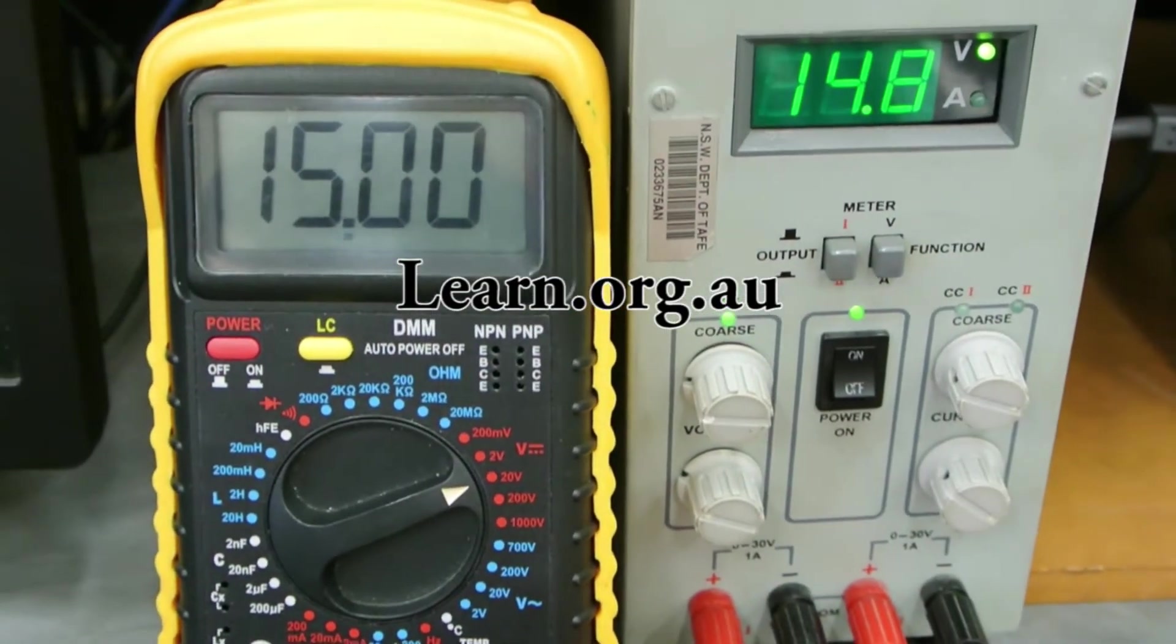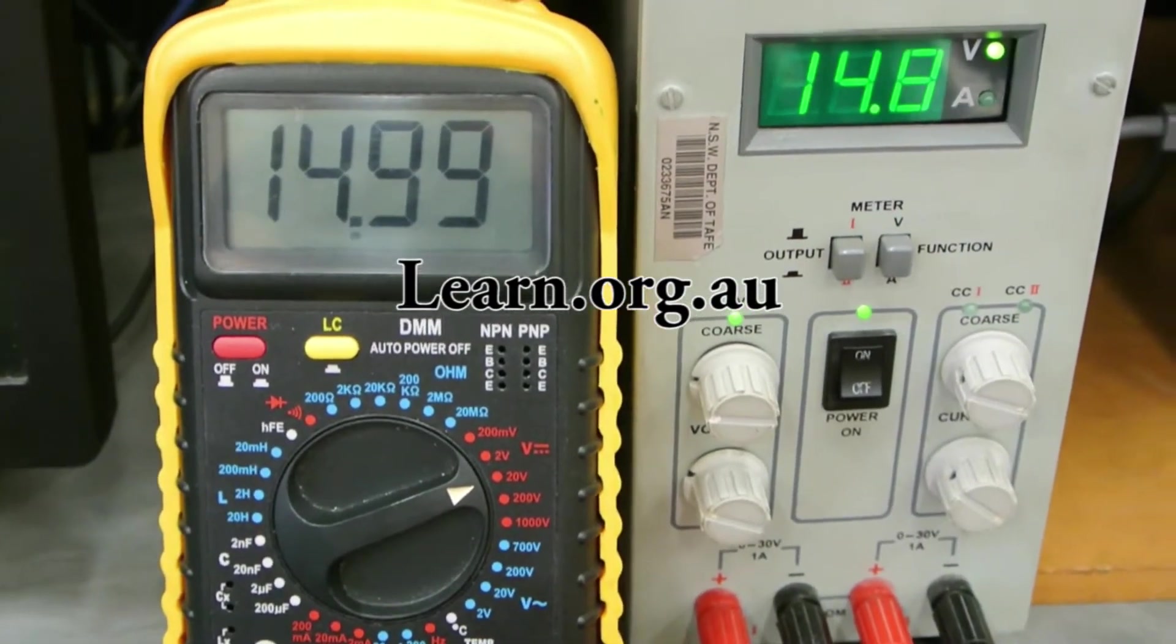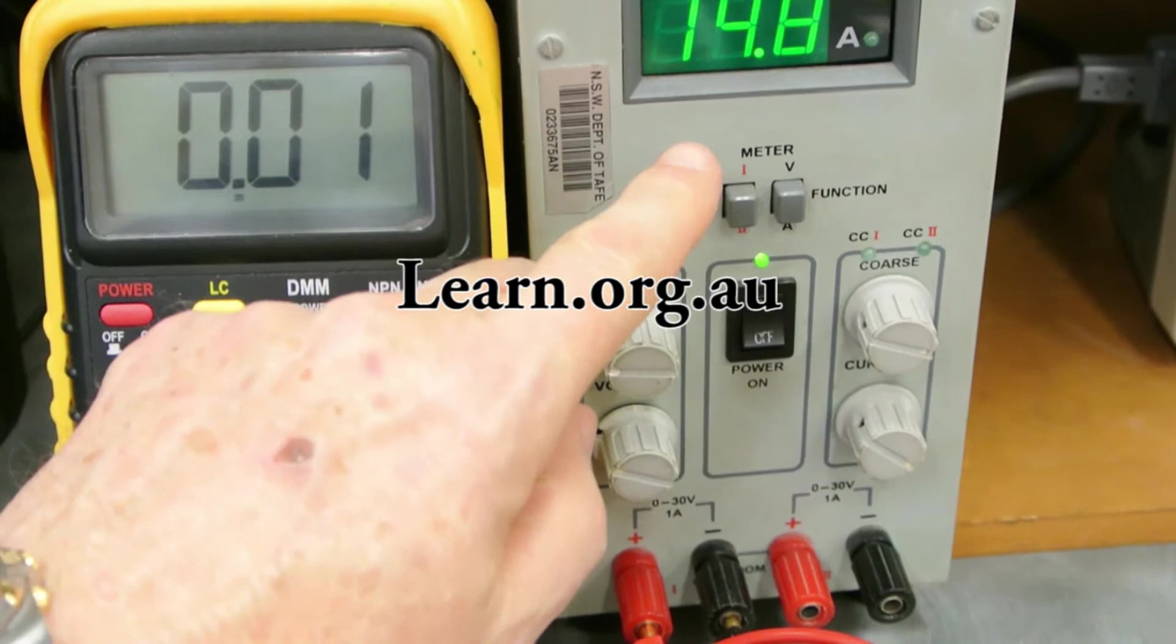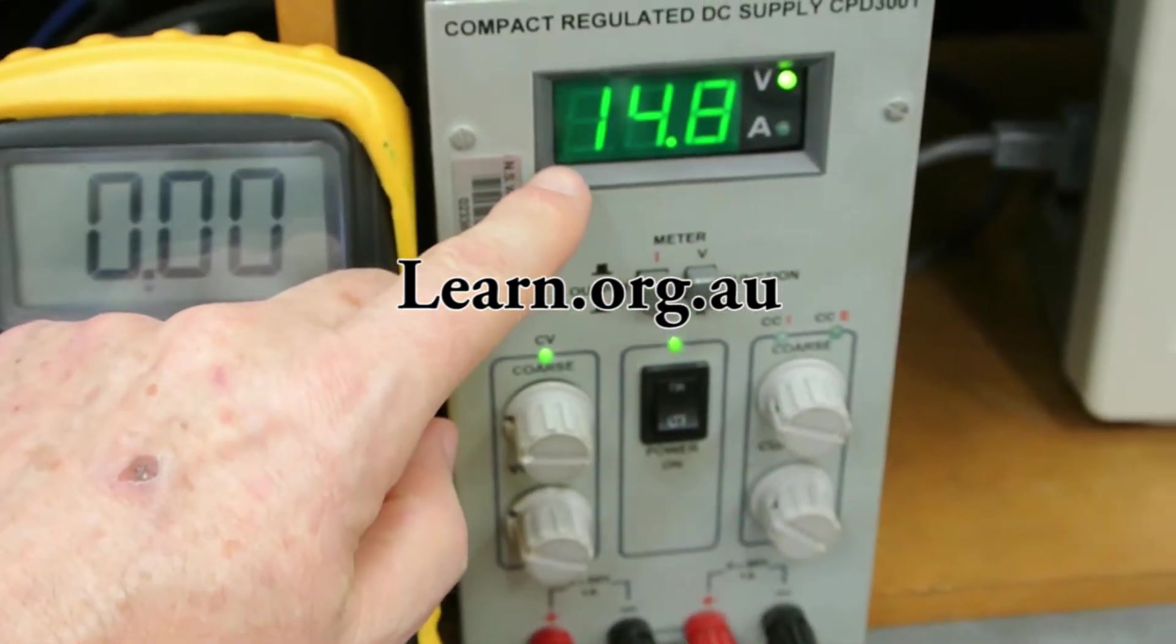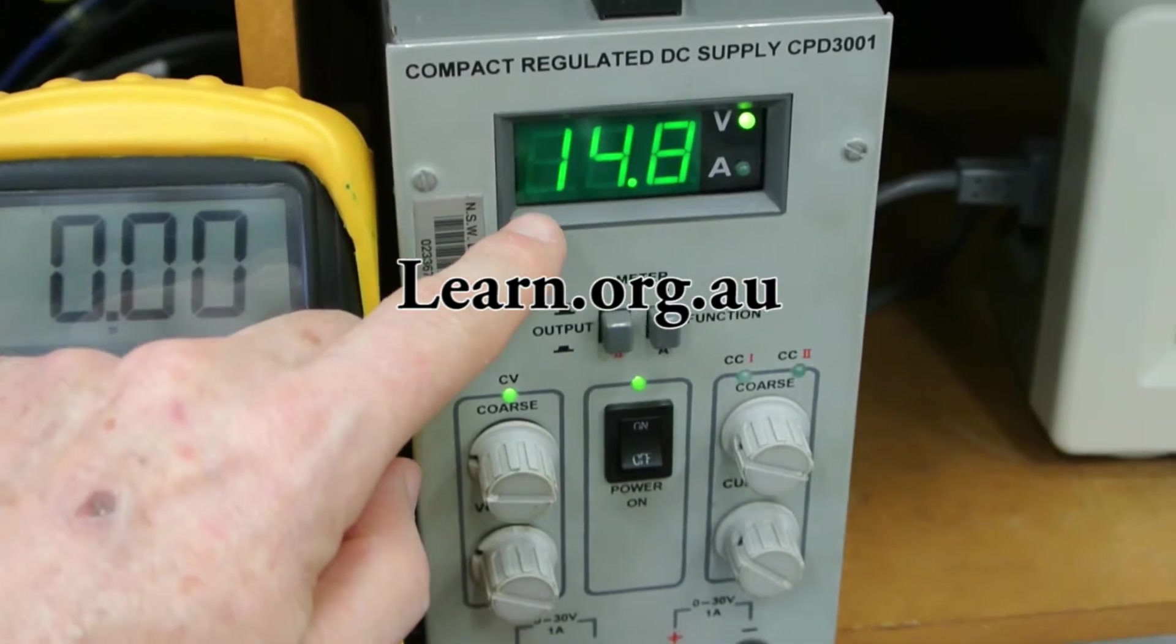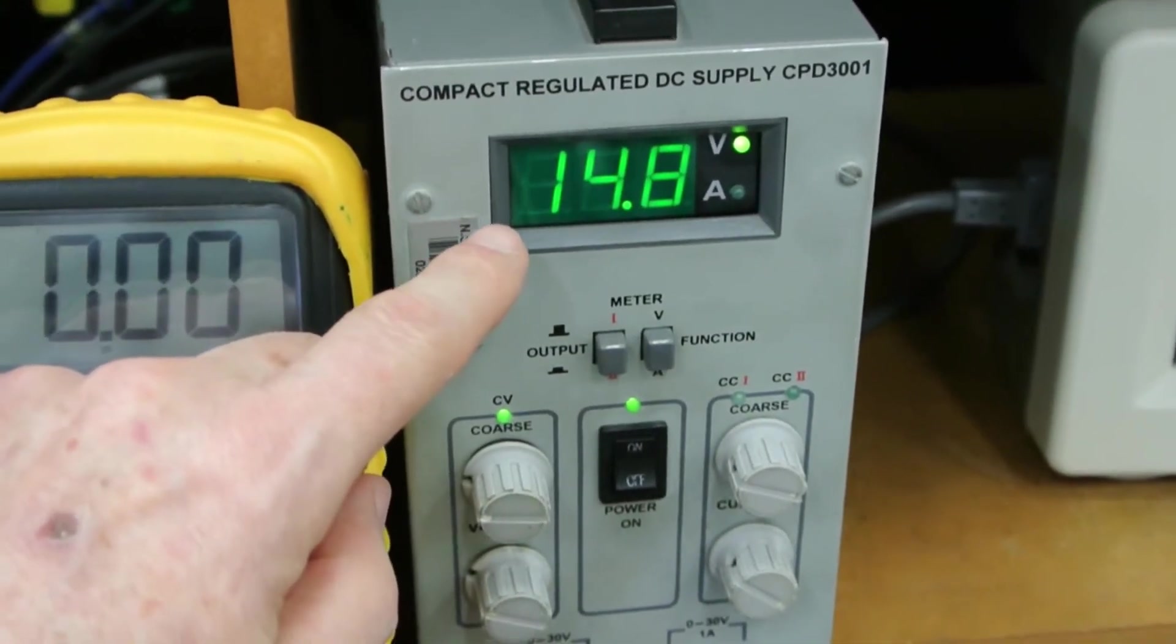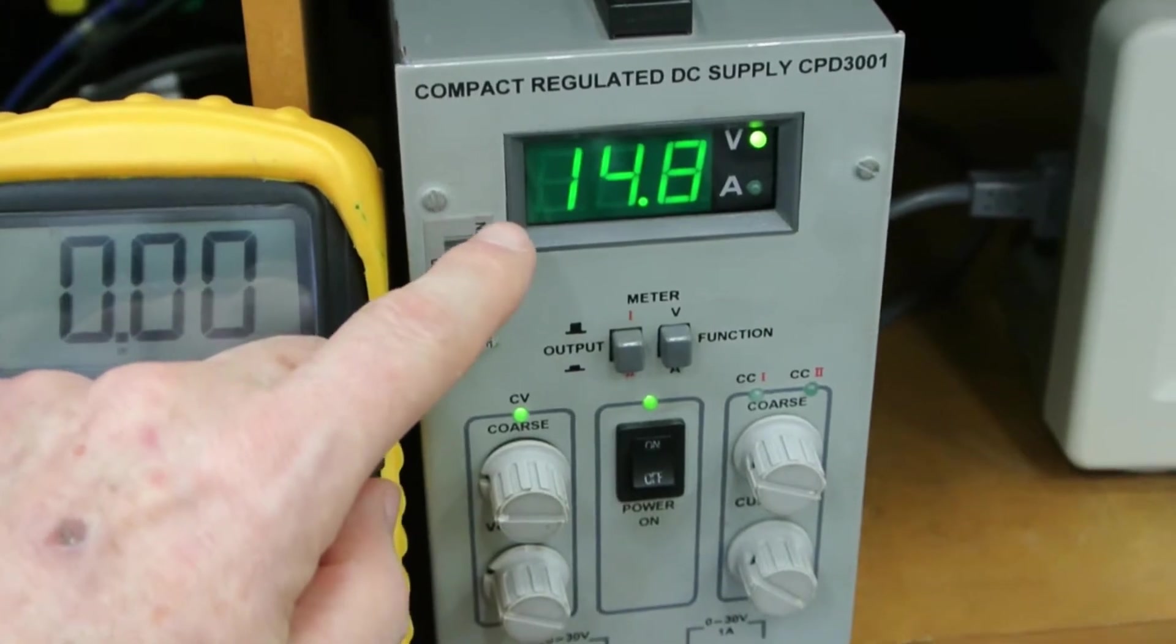One of the first things required in the lab is to adjust the power supply to 15 volts. Never rely on the power supply readout because it's only an indication, an approximation. Sometimes it'll be right, sometimes it might be off by as much as 5%.